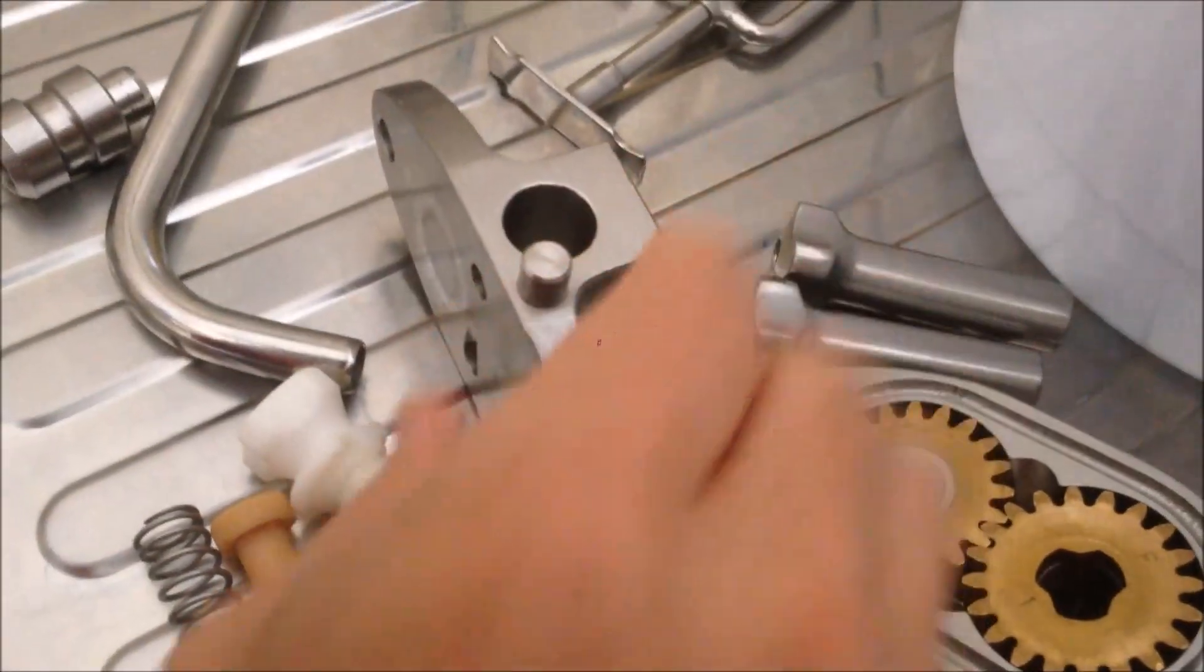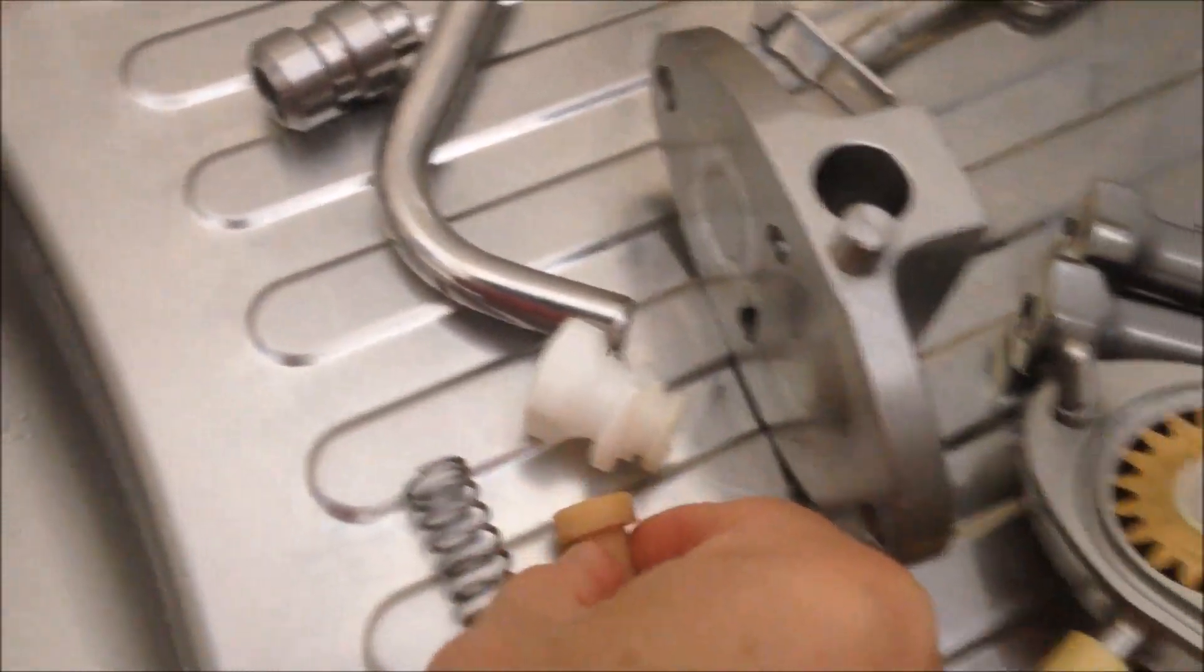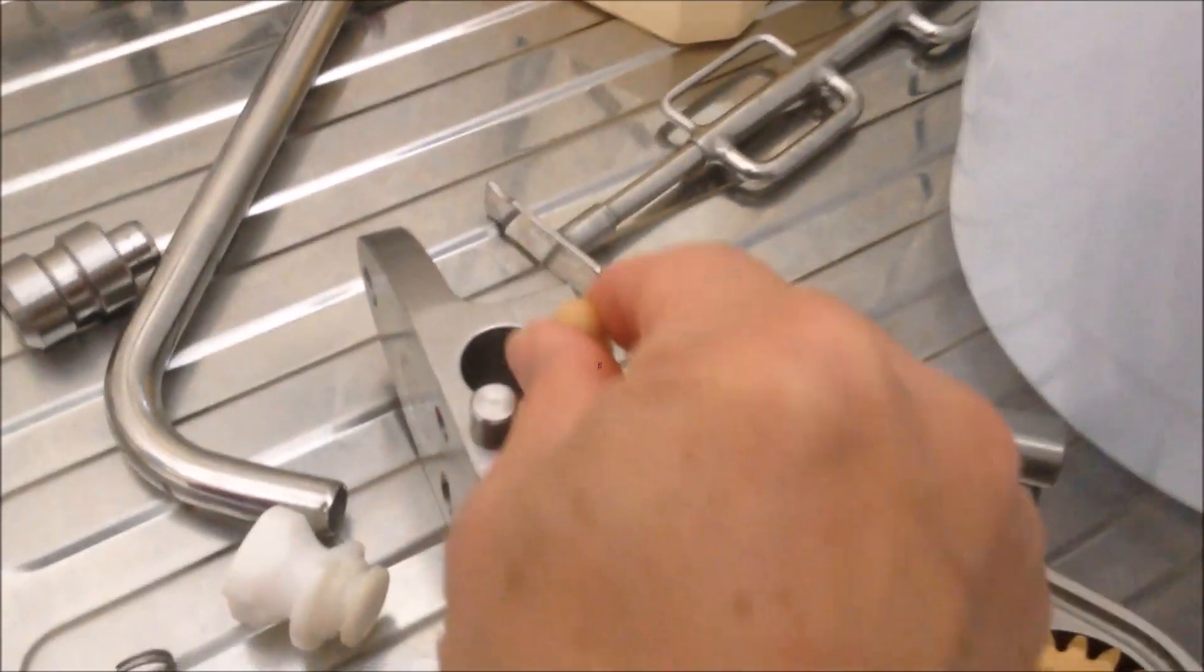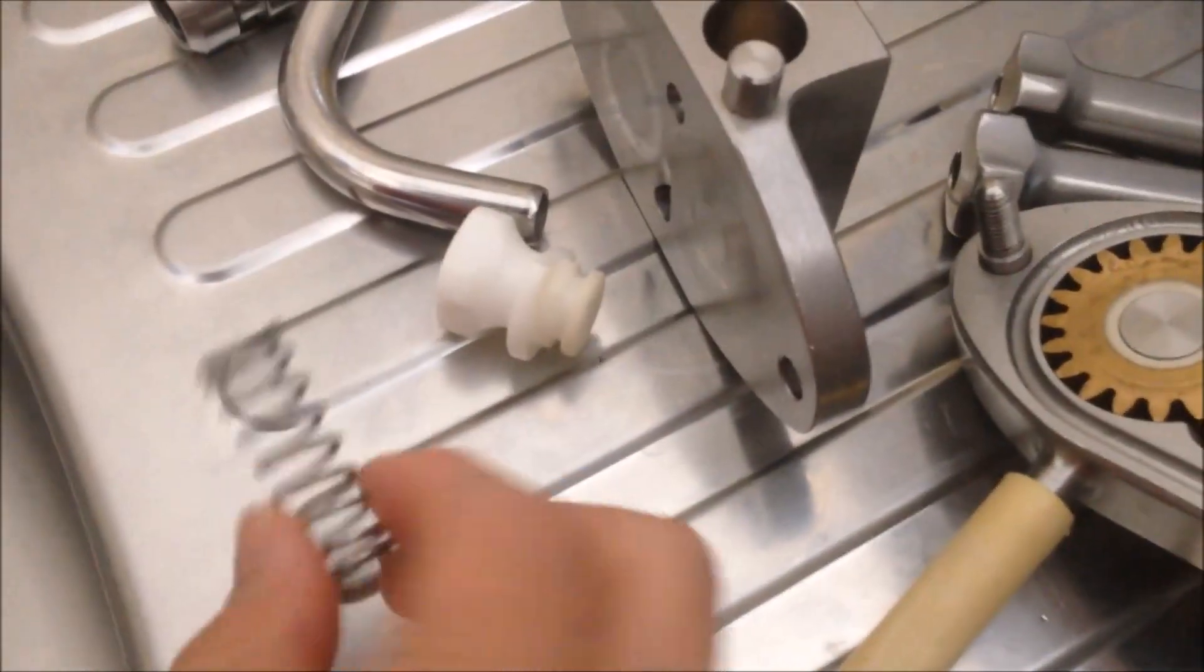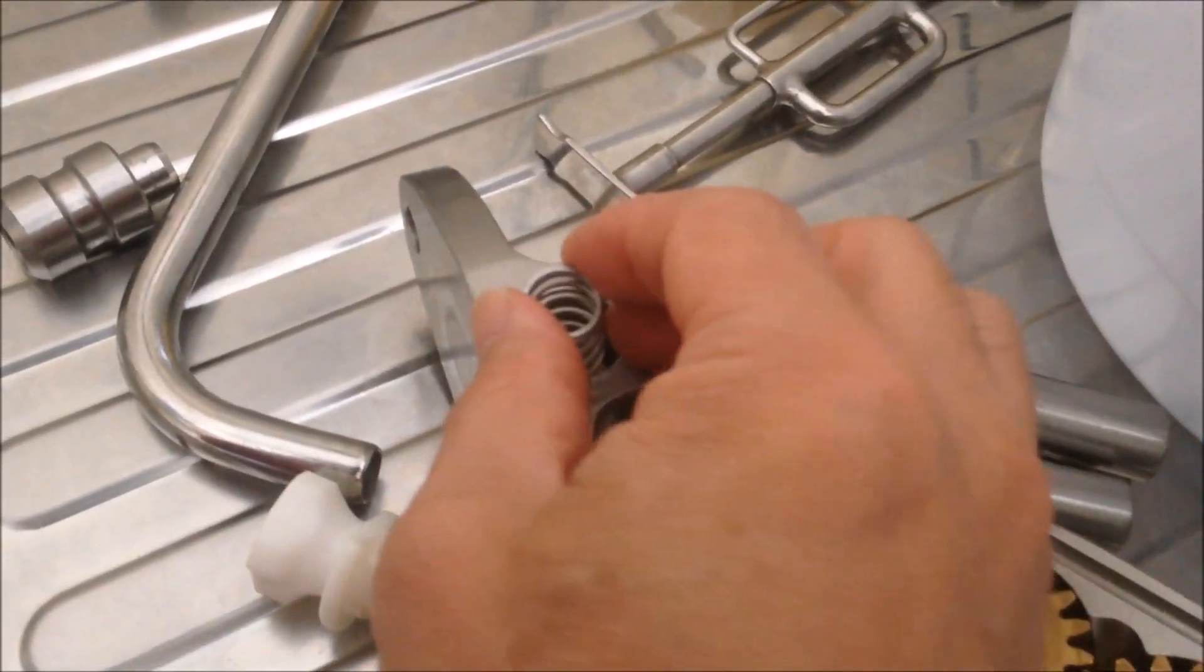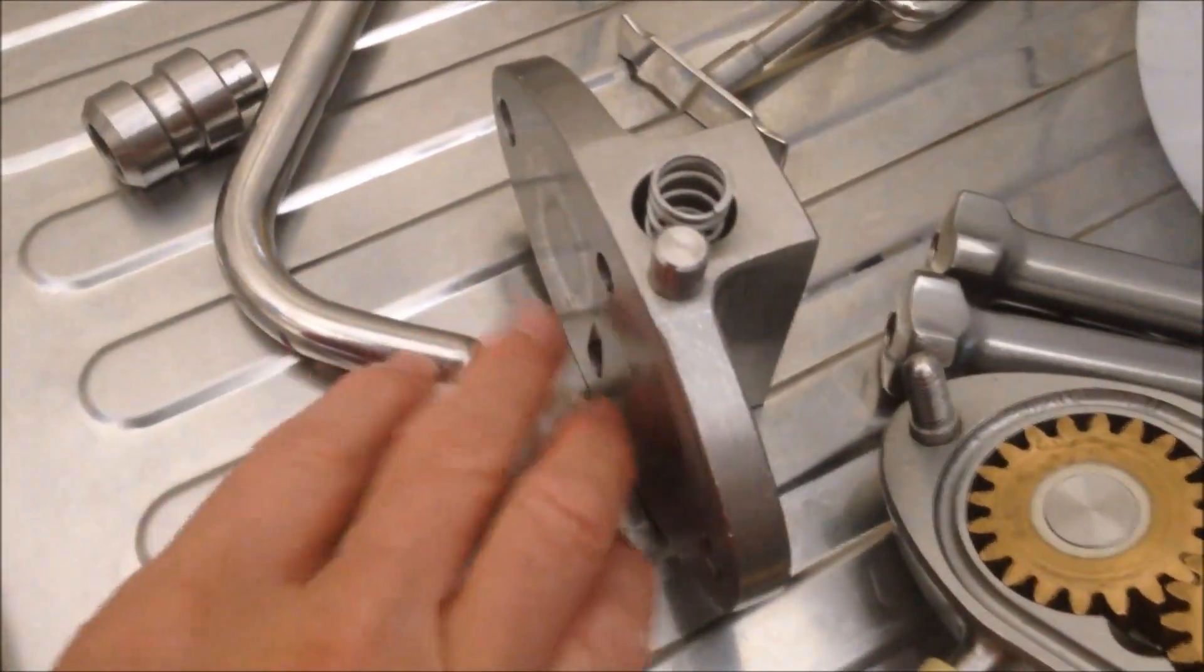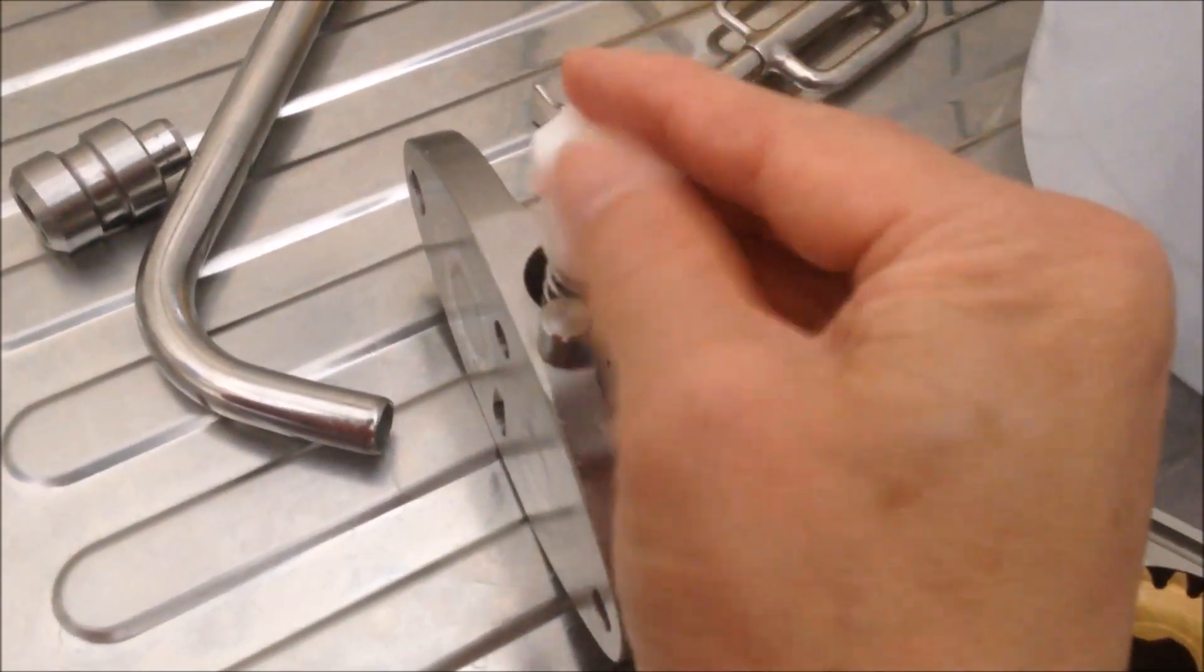The overflow valve has three components. This is the plastic valve body, and it goes in first. Then we have the spring. The spring acts as the pressure regulator - when pressure is high enough, the mix will push the spring down. And last, we have this plug. The plug goes on top of this.